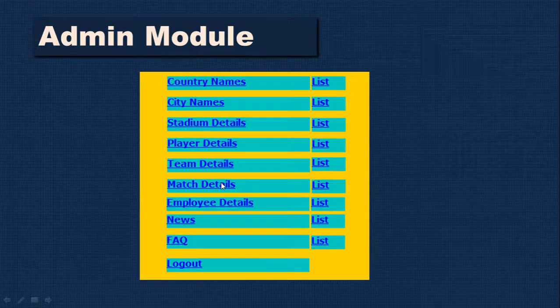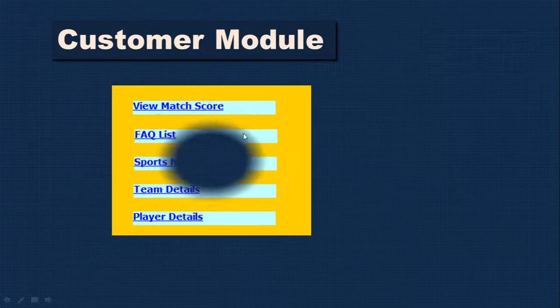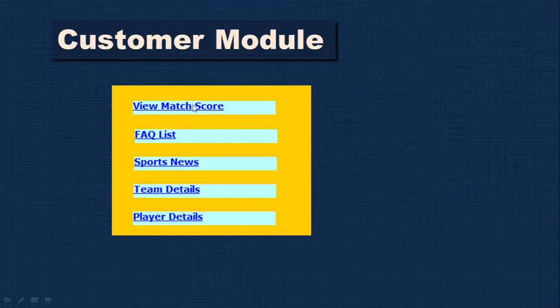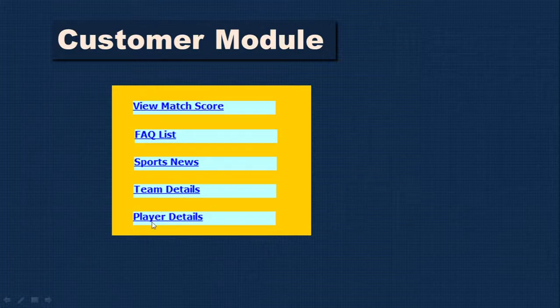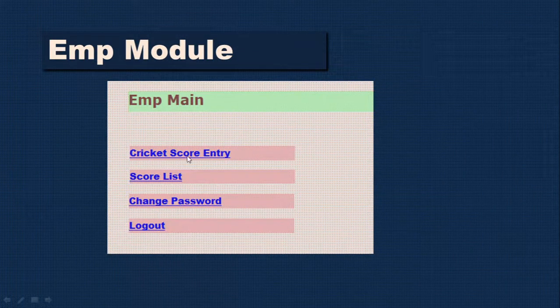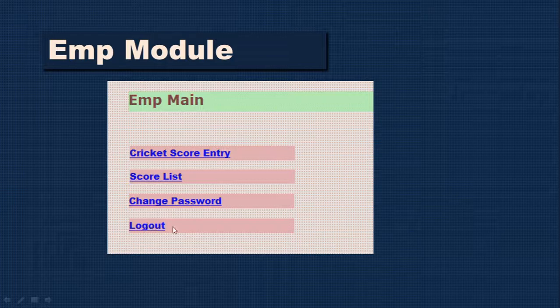Some options can also be shifted to the employee. In the customer module, users can view match scores, the FAQ list, sports news, team details — which teams exist and who the players are — and individual player details. In the employee module, we provide an option to enter the cricket score step by step: the employee can enter the score here and see the corresponding list, change their password, and logout.